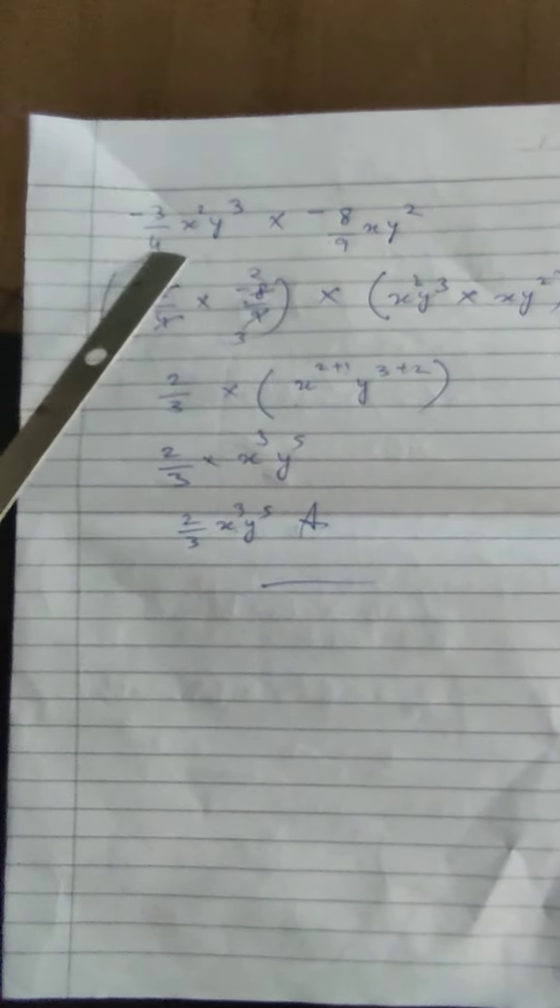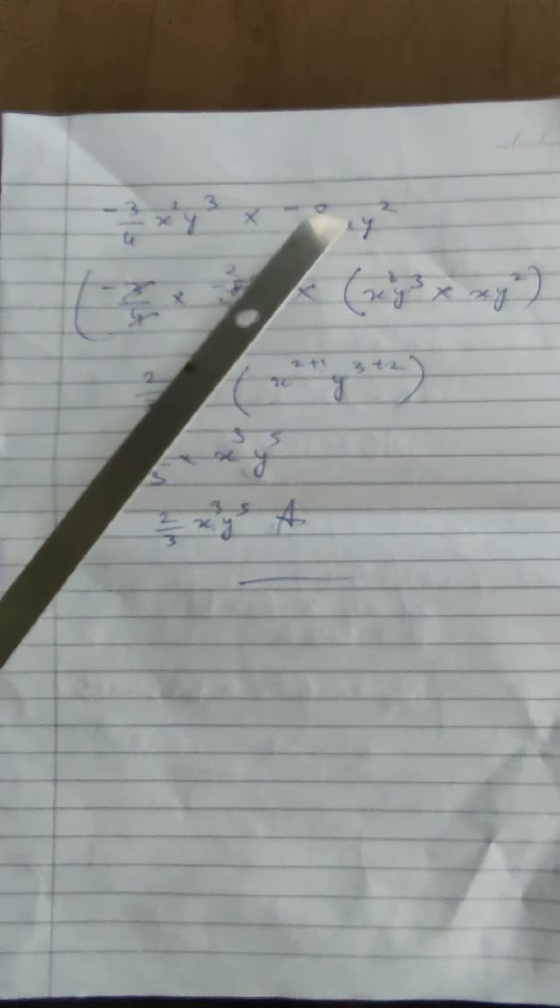Let's take another example. Here we are multiplying this term with this term. First of all, the formula will be applied that we are supposed to multiply numerical coefficients. Here the numerical coefficient is minus 3 over 4, which will be multiplied with another numerical coefficient, minus 8 over 9.